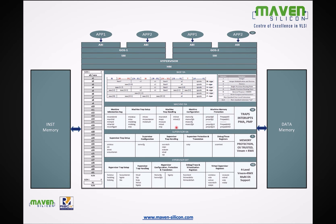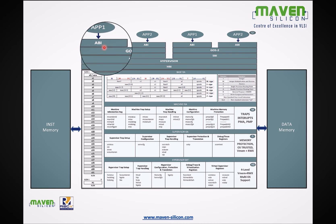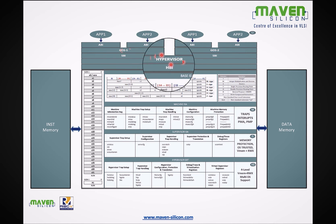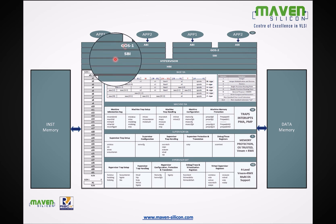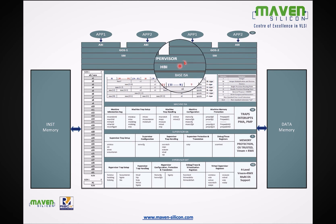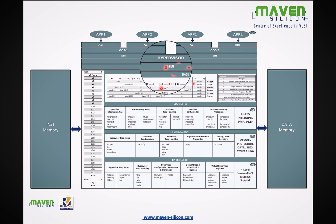RISC-V also defines a Hypervisor Extension to deal with hypervisors. RISC-V provides an interface called HBI — Hypervisor Binary Interface — which provides the necessary function calls so that the hypervisor can interface with the HEE — Hypervisor Execution Environment. HBI includes User Level ISA, Machine ISA, Supervisor ISA, and Hypervisor Extension. In this software stack, all applications interface with the operating system through ABI, operating systems interface with the hypervisor virtual machine through SBI, and the hypervisor interfaces with the execution environment using HBI.